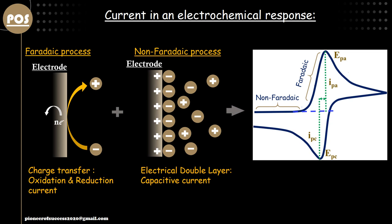In any kind of voltammetry we basically measure current against certain voltage application, and the current is contributed by two different types: the faradaic component and the non-faradaic component. The faradaic component means a reaction is happening on the electrode surface that actually changes the number of electrons in a short time span, and that is why the current ramps up or suddenly ramps down based on the direction of electron flow.